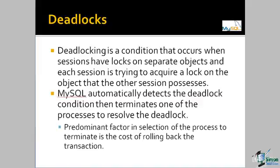What happens when multiple transactions are competing for a set of locks within a table or a database? If transaction A is holding a lock and waiting for another lock, and transaction B is holding that other lock waiting for the lock that transaction A is holding, then transaction A is waiting for transaction B and transaction B is waiting for transaction A. We have a situation referred to as a deadlock, where two transactions are waiting on each other to release resources. This is an amazingly common issue, and many occurrences of deadlocking can be traced back to poor programming practices.